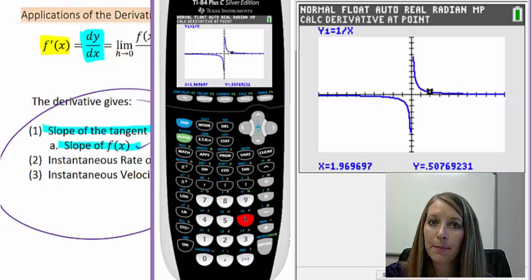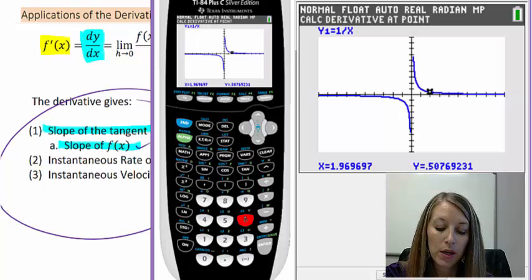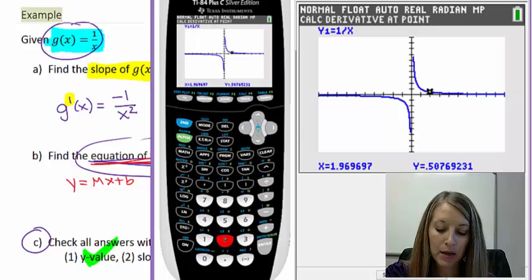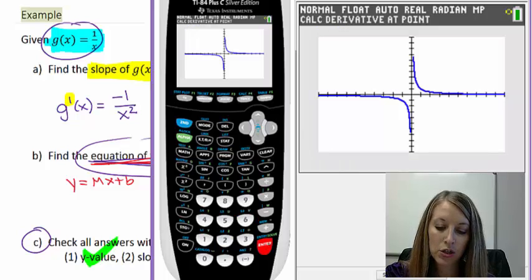Again, it doesn't prompt you anything here, so you have to tell your calculator where you're looking at specifically. We are looking at, in our example, when our x value is 2. We have to type in 2, and then hit enter.